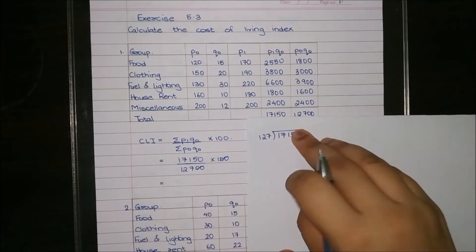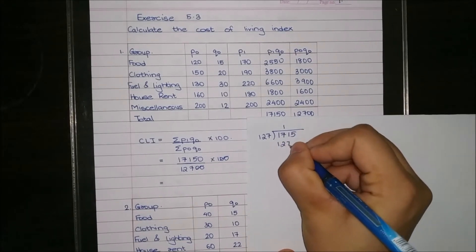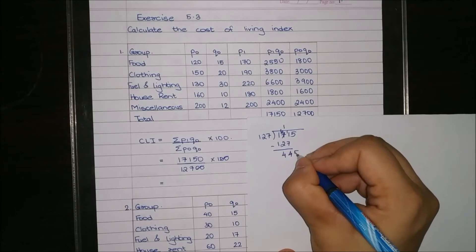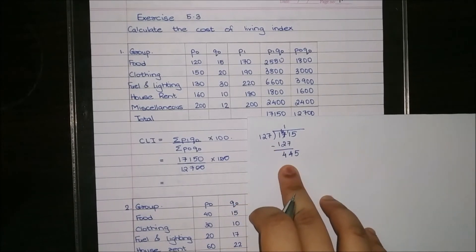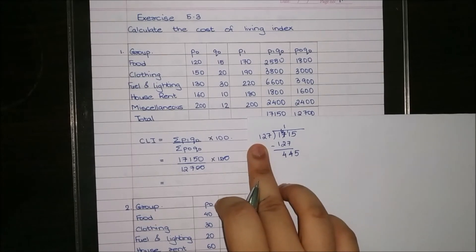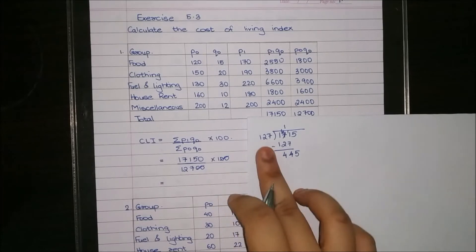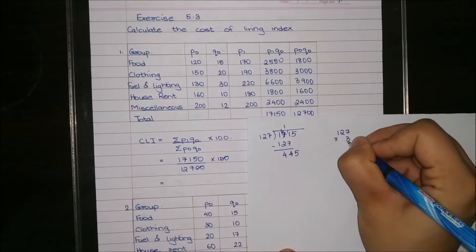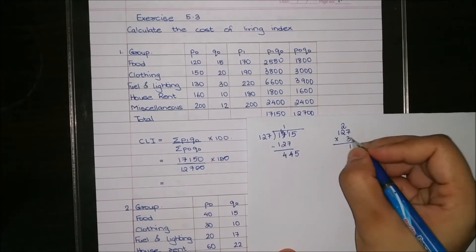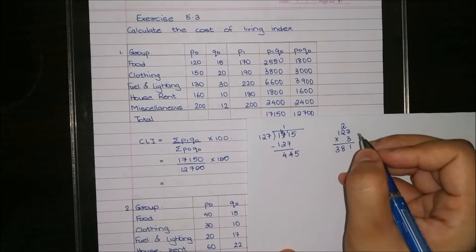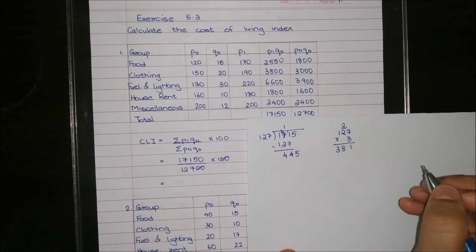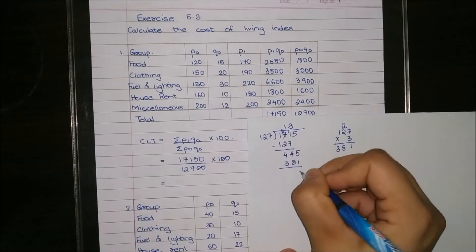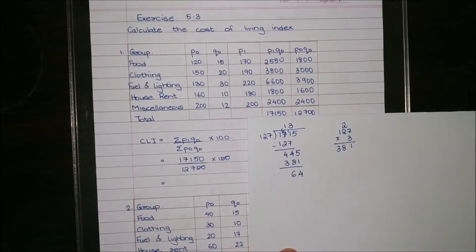For this, first I consider the first three digits. 1 times 127 is 127; on subtracting I get 44, and now I bring down the 5. So now I have to consider 127 and 445. I know this is near to 125, and 125 times 4 is 500, so we try 127 into 3 to get a number lower than 445. We get 381.